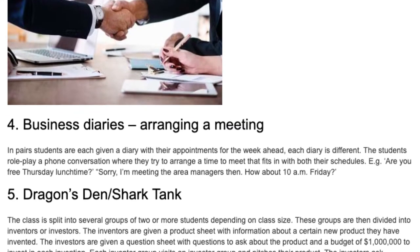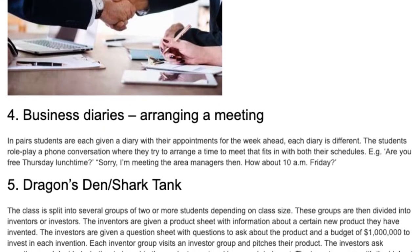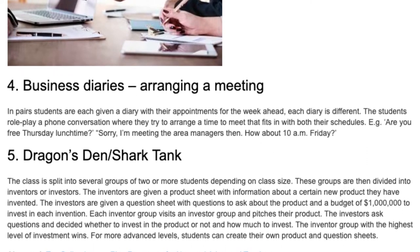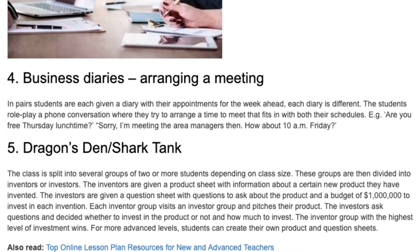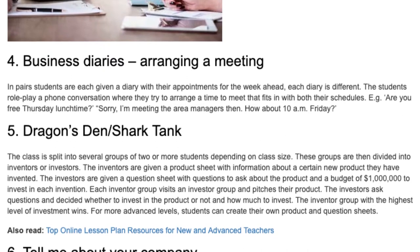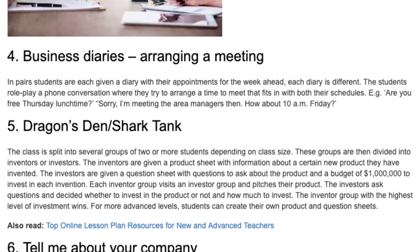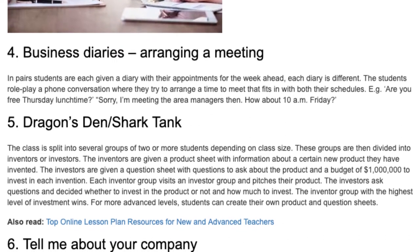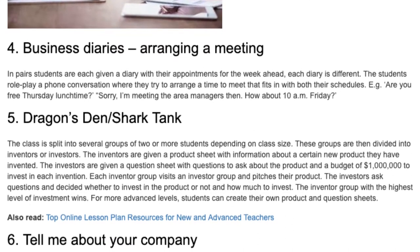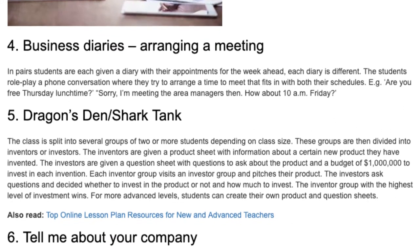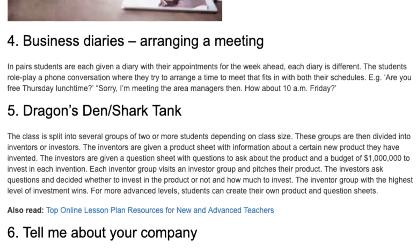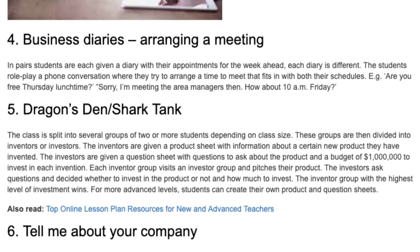Idea 5: Dragons Den / Shark Tank. The class is split into several groups of two or more students depending on class size. These groups are then divided into inventors or investors. The inventors are given a product sheet with information about a new product they have invented. The investors are given a question sheet with questions to ask about the product and a budget of $1 million to invest in each invention.